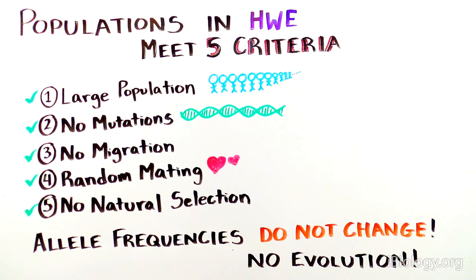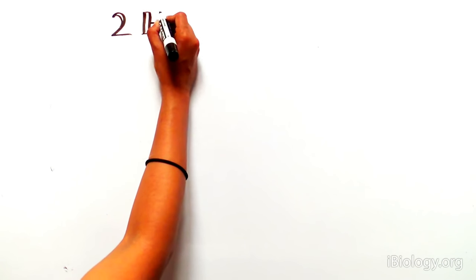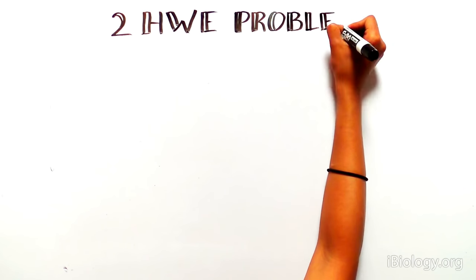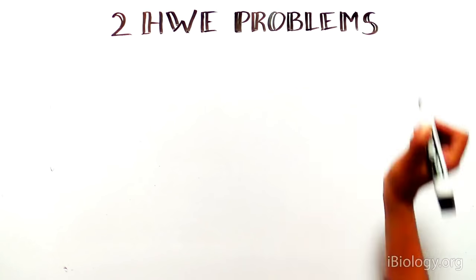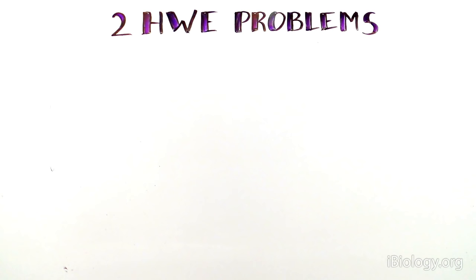If you calculate allele frequencies and find that they have changed over time, you can say that the population is not in Hardy-Weinberg equilibrium, meaning that it has evolved. Let's go through two related examples to learn how to calculate allele and genotype frequencies, and start thinking about why a population may or may not be evolving.